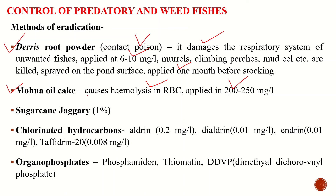We can also use sugarcane jaggery at 1% concentration in the fish pond for eradication of unwanted fish species. The effective ingredient in sugarcane jaggery is saponin. We can also use some chemicals like chlorinated hydrocarbons — aldrin, dieldrin, endrin, and thiodan 20. These are some chlorinated hydrocarbons used for fish eradication.